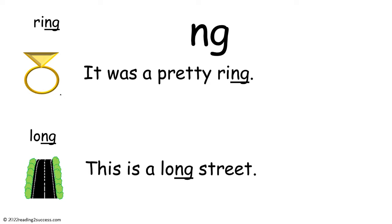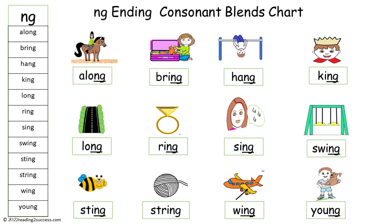Explain that the letters NG blend together when said as in the words ring and long. Then say the sentences with kids: 'It was a pretty ring' and 'This is a long street.' Now read the words in this chart with kids: along, bring, hang,